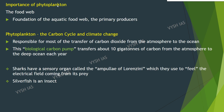Importance of phytoplankton: They are the foundation of the aquatic food web. They are the primary producers and feed everything from microscopic zooplankton to larger organisms. Smaller fish and invertebrates graze on phytoplankton and those organisms are consumed by bigger ones. Phytoplankton also play a role in the carbon cycle and climate change.